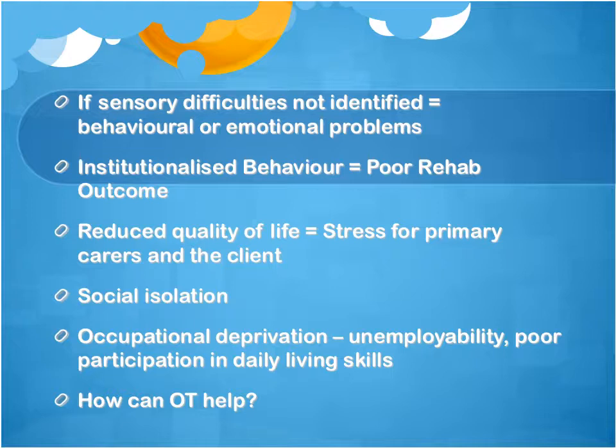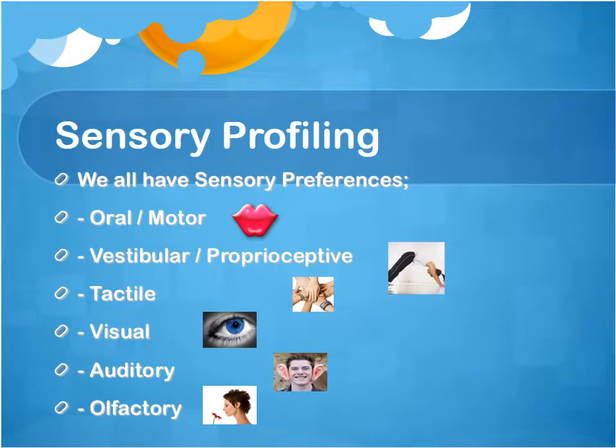So how can we help as occupational scientists? Sensory profiling. We all have sensory preferences. These are oral motor, vestibular, proprioceptive, tactile, visual, auditory, and olfactory.